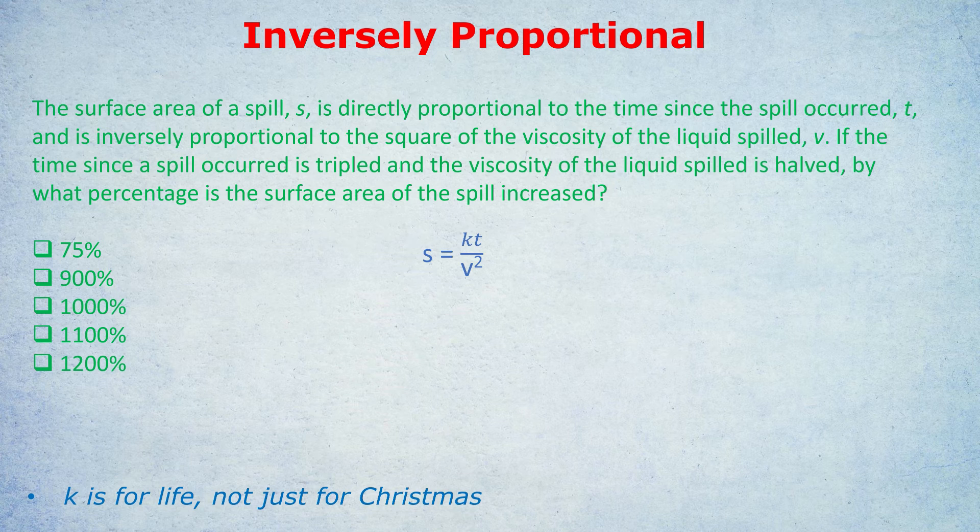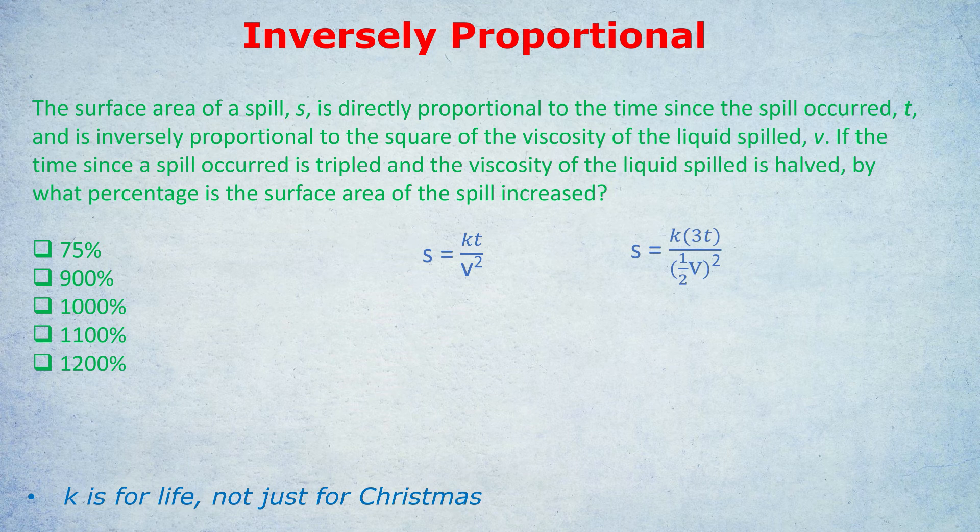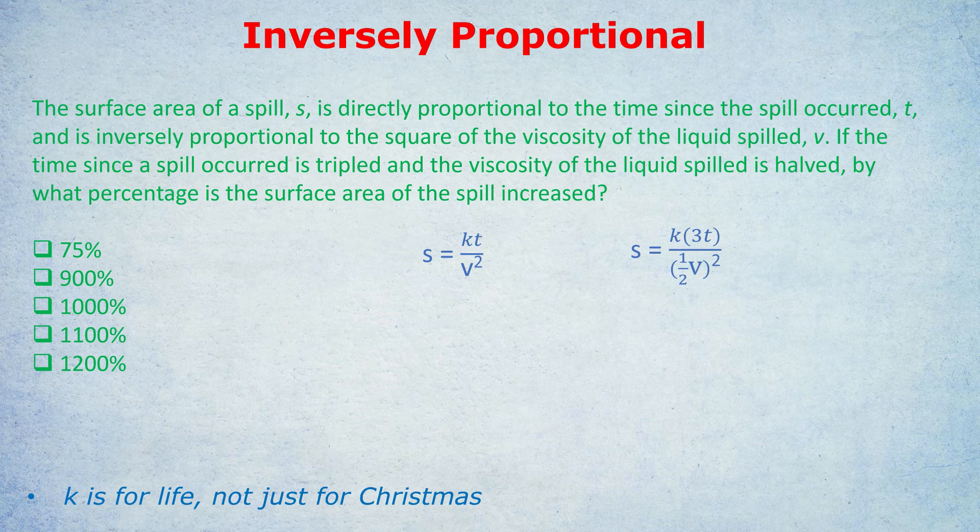Notice it said in the final sentence, if the time since the spill occurred is tripled, so I'm just going to replace the T with 3T because the time has tripled. Then it says the viscosity of the liquid spilled is halved, so I'm going to replace V with a half V. And if I do those two things, the equation should take care of itself. Don't forget to keep brackets though. So I've replaced the T with 3T, and I've replaced the V with a half V. But I've kept the brackets—they're important, because it's the entire viscosity, half V, which is being squared.